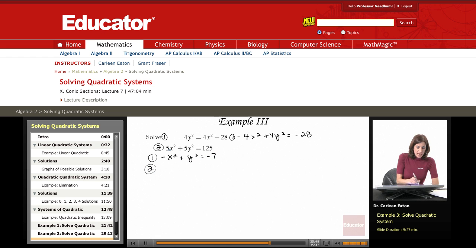For this second equation, I have a common factor of 5. So I'll divide both sides by 5 to get x squared plus y squared. 125 divided by 5 is 25.